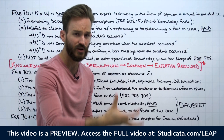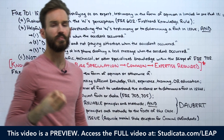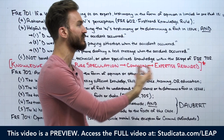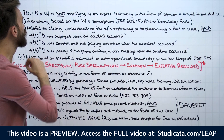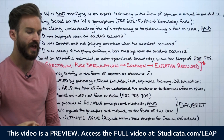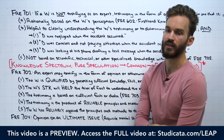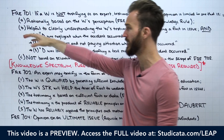Remember the whole idea here is to help the fact-finder, which is our second element. If we have a witness who is not testifying as an expert, testimony in the form of opinion is limited to one that is, number one, rationally based on the witness's perception, and number two, helpful to clearly understanding the witness's testimony or to determining a fact in issue.